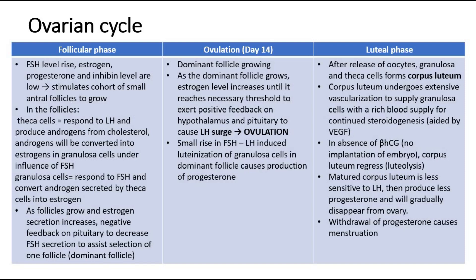Within the follicles, there are the theca cells and granulosa cells. The theca cells will respond to LH and produce androgens from cholesterol, where the androgens will be further converted into oestrogens in the granulosa cells under the influence of FSH. As the follicles continue to grow and oestrogen secretion increases, high oestrogen levels will cause a negative feedback on the pituitary gland to reduce FSH secretion, helping in the selection of the dominant follicle.